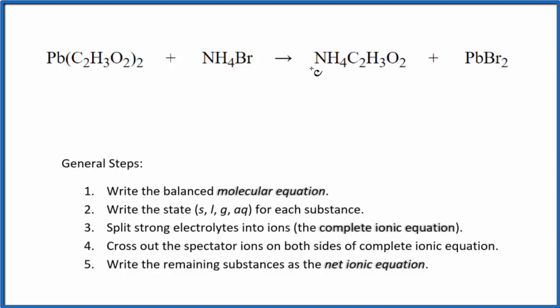I can see here I have one bromine and then two here, so I'm going to put a 2 in front of the ammonium bromide. Now I have two ammoniums and only one here, so if I put a 2 here, that gives me two ammoniums, so those are balanced.